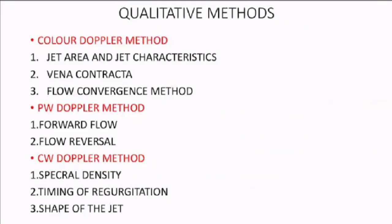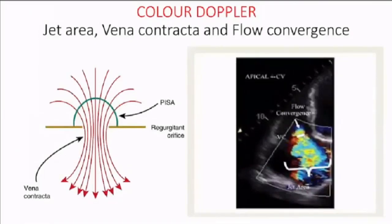To assess tricuspid regurgitation severity based on echo, we divide it into qualitative and quantitative methods. In the qualitative method, there are three color Doppler parameters: jet area, vena contracta, and flow convergence; plus pulse Doppler and continuous Doppler. For color Doppler, we measure jet area, vena contracta, and flow convergence. When regurgitation occurs from RV to right atrium, the color seen in the right atrium is the TR jet area. At the valve level we see the vena contracta, and proximal to it is the flow convergence zone.